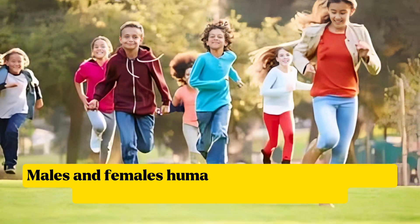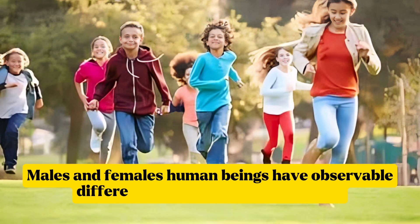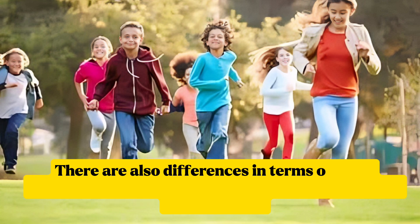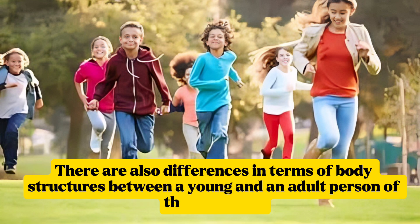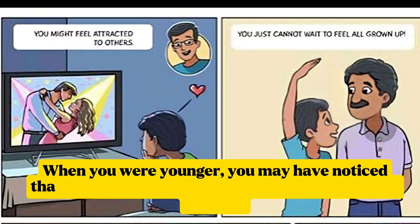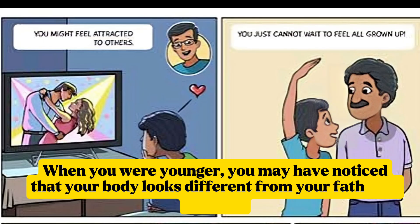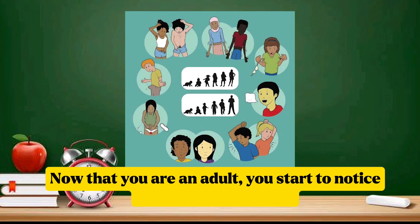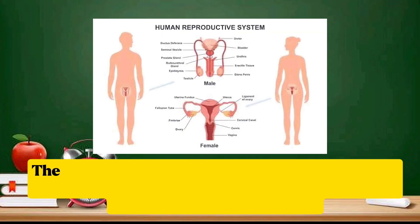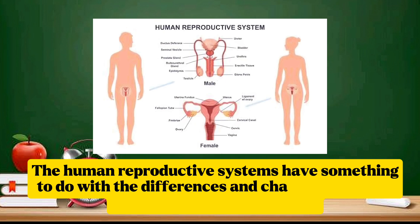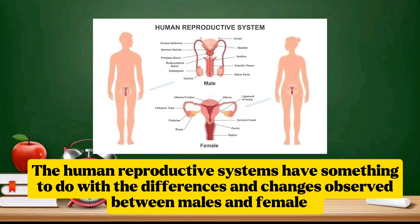Males and females have observable differences in their body structures. There are also differences in terms of body structures between a young and an adult person of the same sex. When you were younger, your body looked different from your father or mother. Now that you are older, you start to notice changes in your body. The human reproductive systems have something to do with these differences and changes observed between males and females.